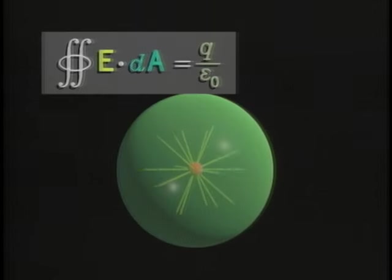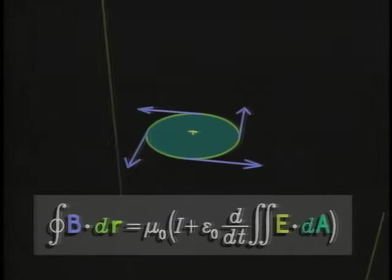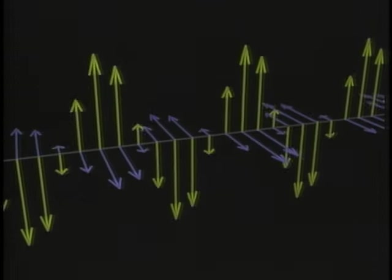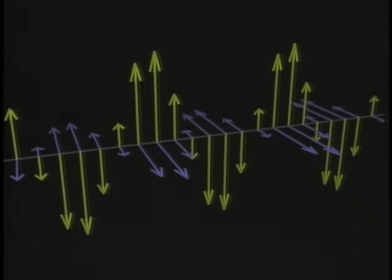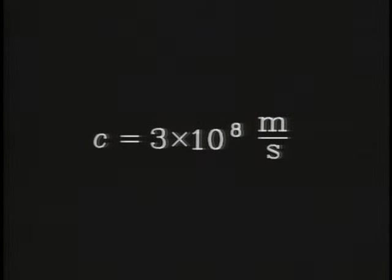James Maxwell combined the laws relating electric and magnetic fields into four equations. He found that they predicted self-propagating electromagnetic waves that moved at the speed of light.